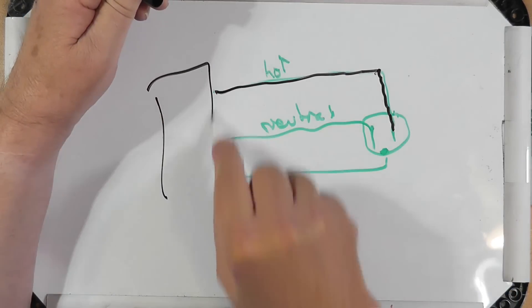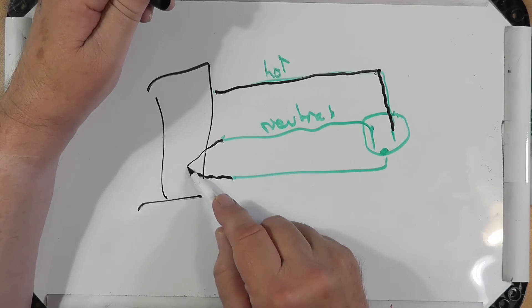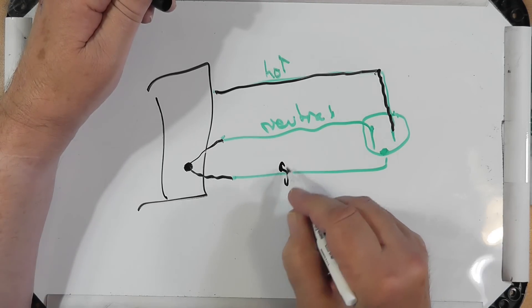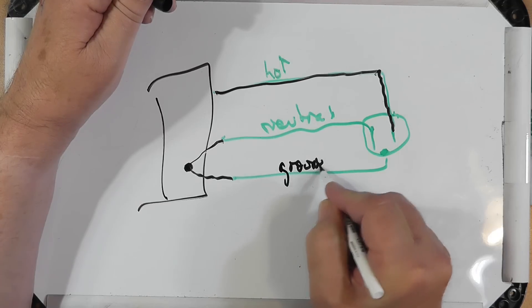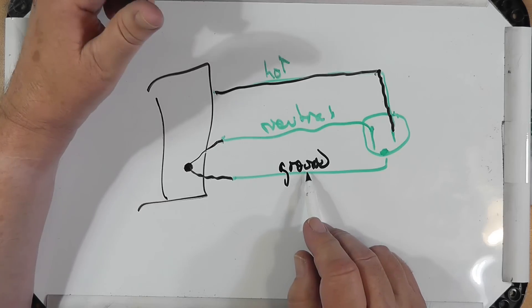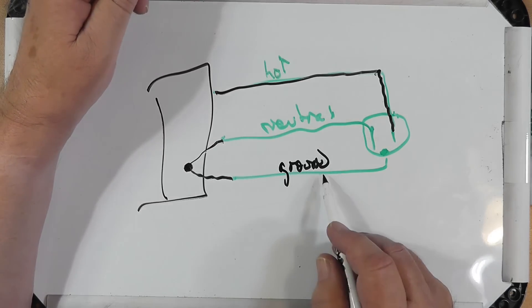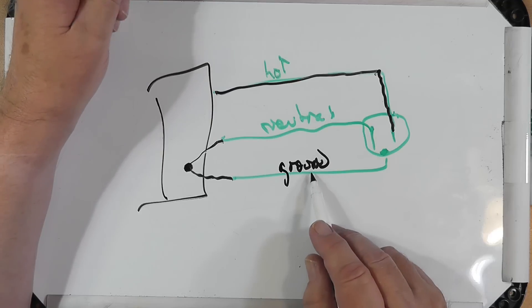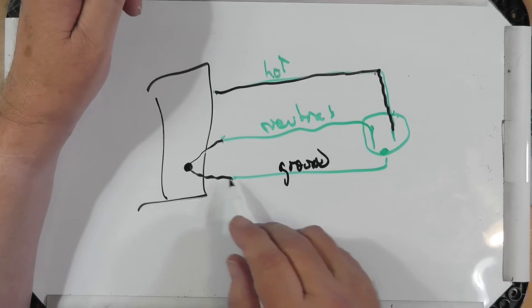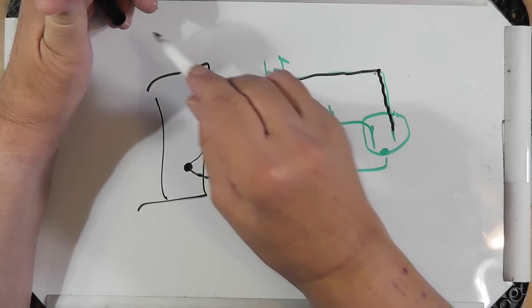This goes back to the panel, and the panel is the only single point where the ground and the neutral are connected together. So no electricity should flow in the ground. It should flow in the neutrals. If something flows in the ground, this is your ground fault interrupter, or GFI, will cause this to trip the breaker because something is wrong. That's house wiring.